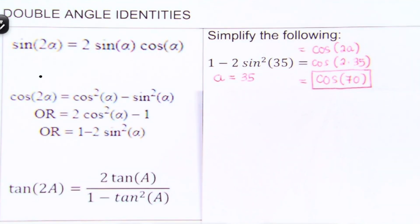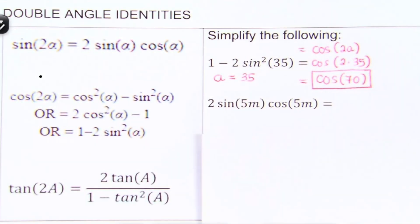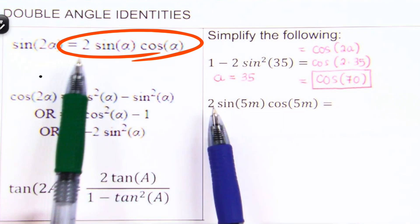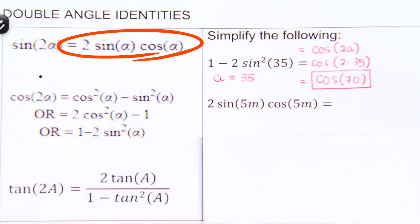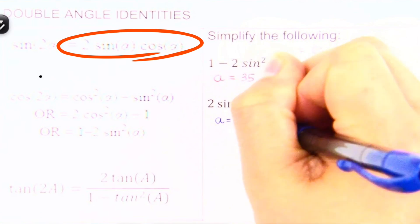Now let's move on to the next example. We are given 5 sine of 5M cosine of 5M. If you notice, this matches up to 2 sine A cosine A. We actually have a match here — we get a 2, sine 5M matches to A, and cosine 5M matches to cosine A. So we can go ahead and say that our A is actually 5M.